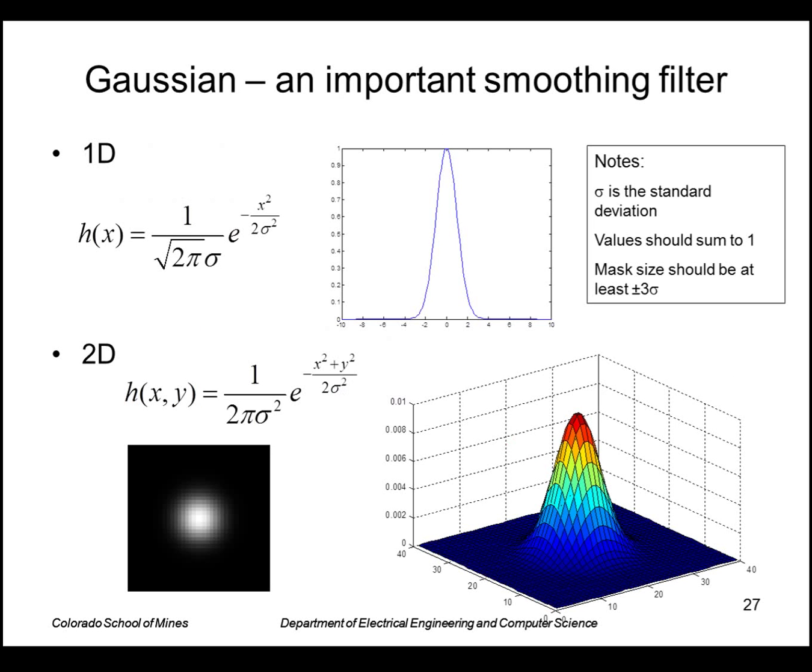A Gaussian is an important example of a spatial filter we'll see a lot. In one dimension, of course it's e to the minus x squared over two sigma squared, which has this shape with a normalizing coefficient so that the integral integrates to one.